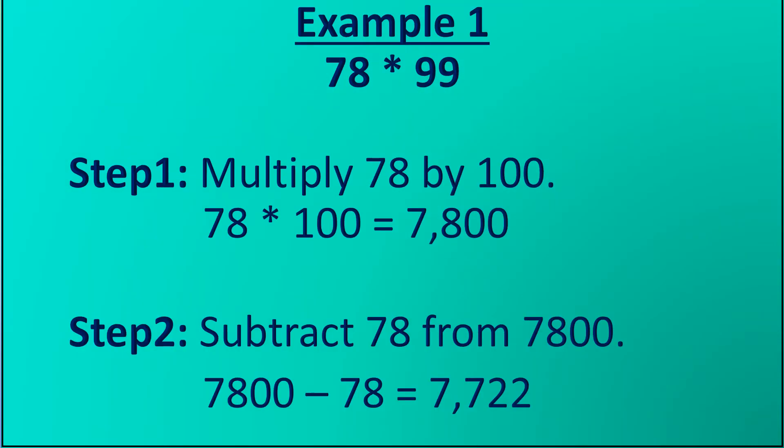We will see some examples now. Example 1: 78 multiplied by 99. Step 1: multiply 78 by 100 — the answer is 7800. Step 2: subtract the same number, that is 78, from 7800. The answer is 7722.